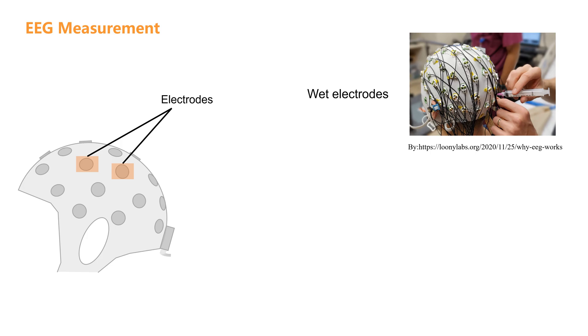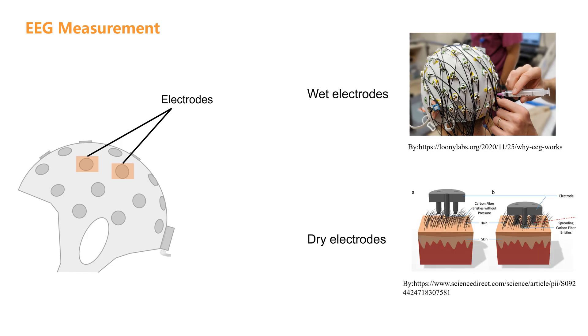Next are dry electrodes, the fast food utensils of EEG. They don't require gel and can measure signals simply by making contact with the skin. The key advantage here is convenience, making them ideal for portable devices or quick measurements.